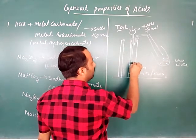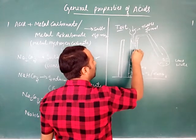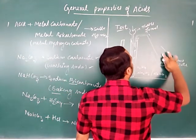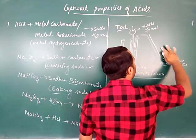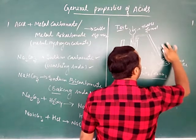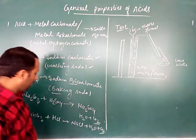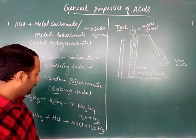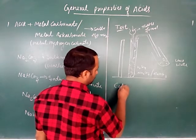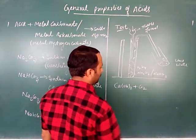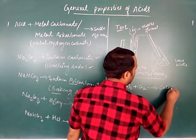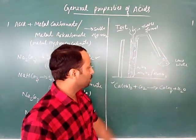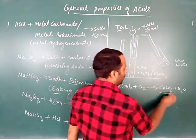After mixing, carbon dioxide gas is released. This passes through the delivery tube into lime water. When carbon dioxide gas is passed into lime water, it turns milky. The milky color indicates that carbon dioxide gas has been released. Ca(OH)₂ plus CO₂ gives calcium carbonate plus water. This is the test for CO₂.